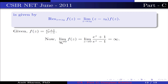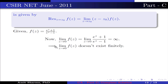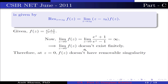Now limit z→0 f(z) = limit z→0 (e^z + 1)/(e^z - 1) = ∞. This implies the limit does not exist finitely. Therefore at z = 0, f does not have a removable singularity, so option 1 is false.